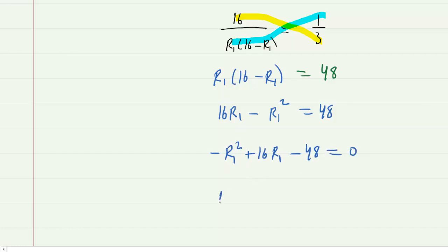I prefer to divide each term by negative 1. So basically switch the signs of each term. And you're left with this equation here.